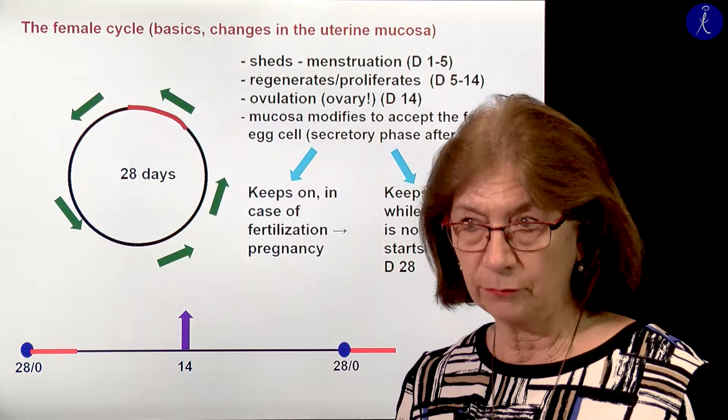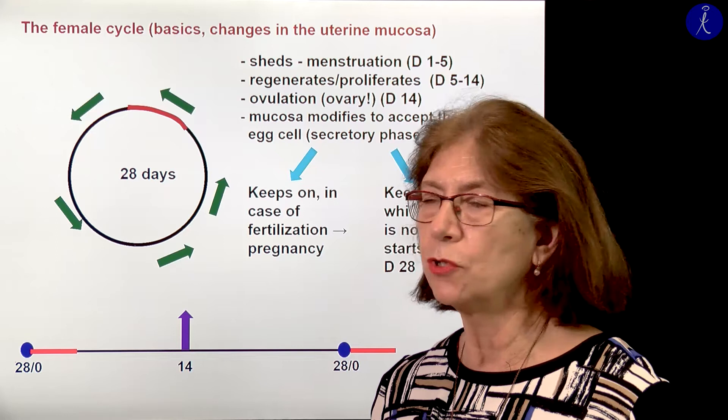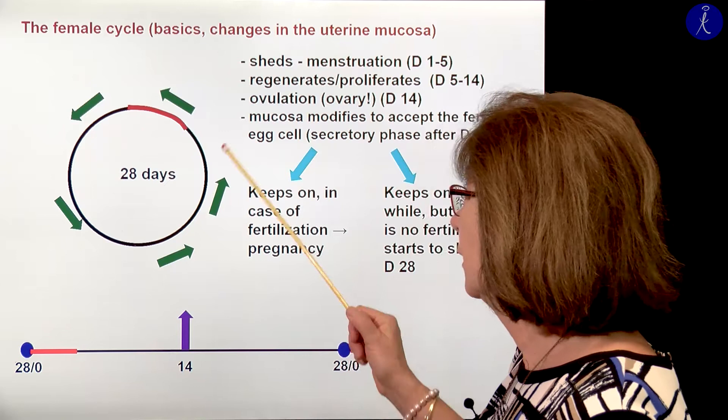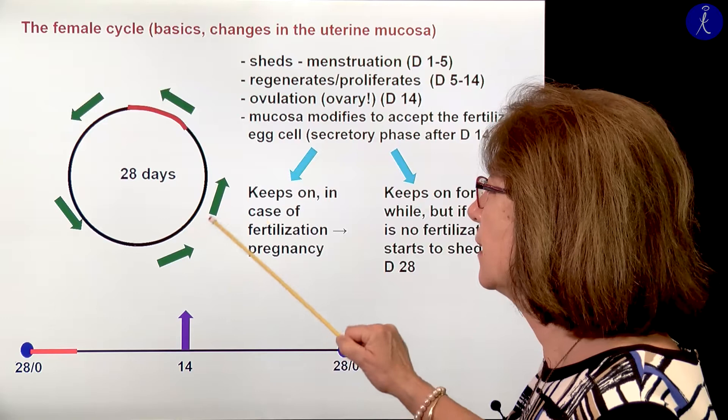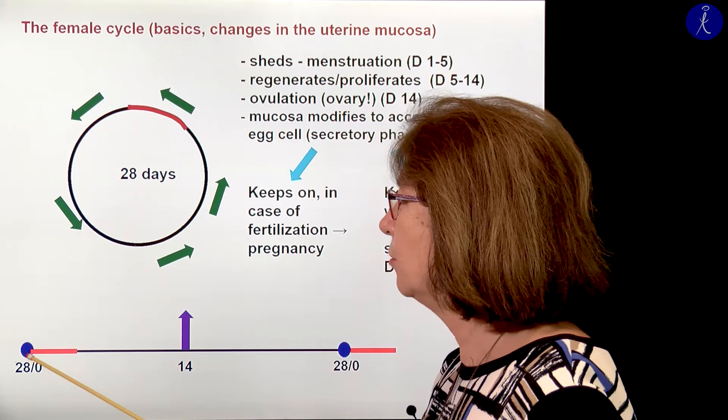We have to know a little bit about the female cycle. You will learn more about that in detail in physiology and also in histology in the next semester. The female cycle — what we see in the uterine cavity — is the changes of the uterine mucosa. This is truly a cycle. It runs around. It's 28 days long on average. But for practical reasons, we cut this cycle and make of it a straight line in the book.